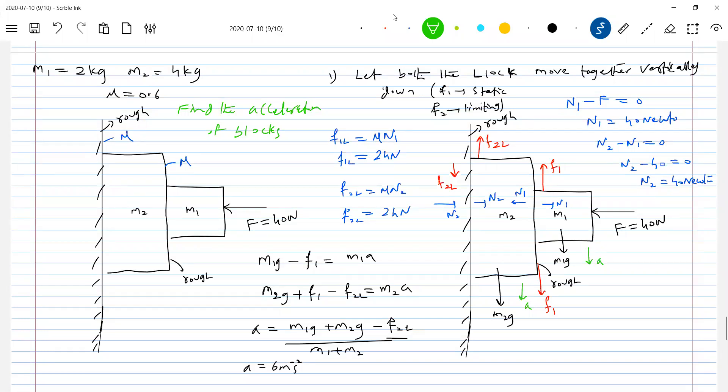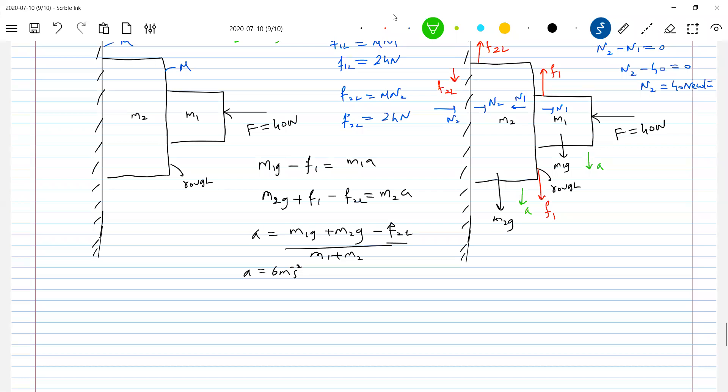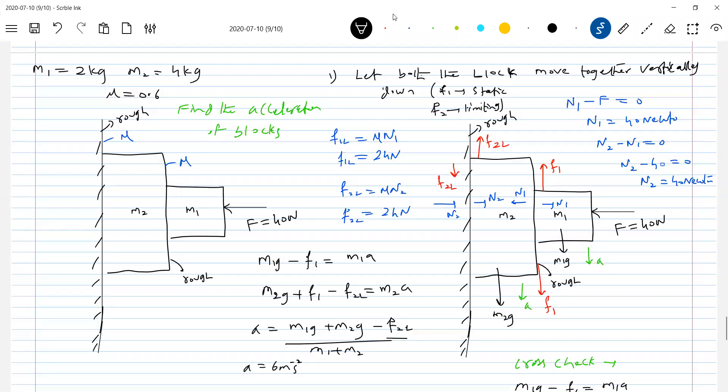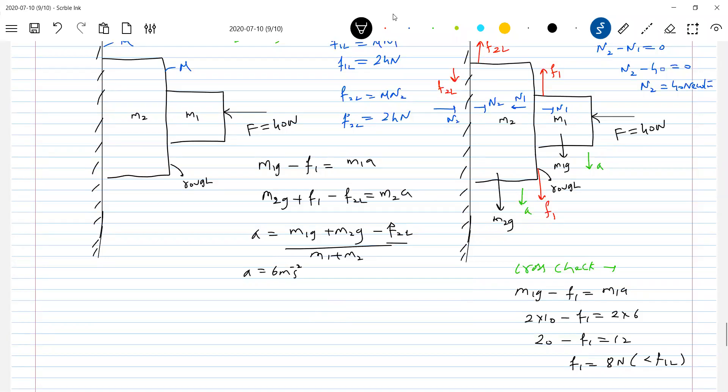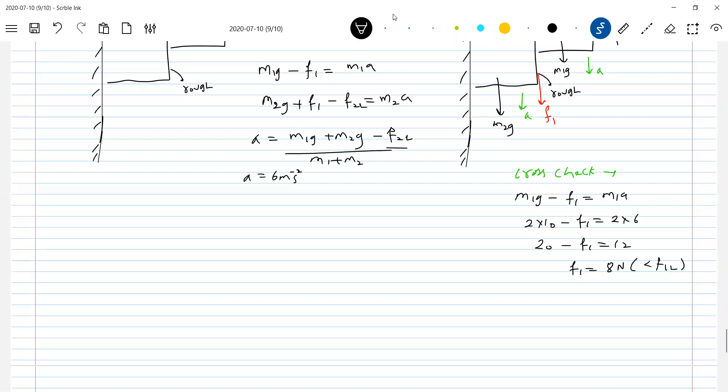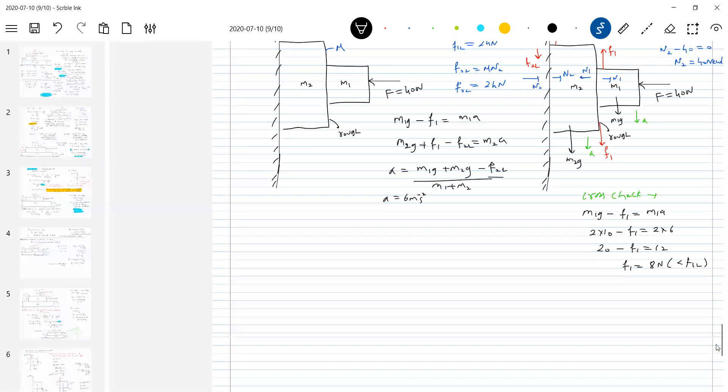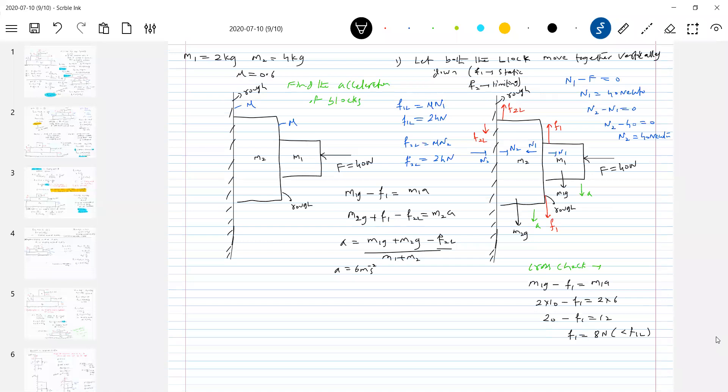We have to cross-check that F1, no? What we assumed static - is it really static is what you have to cross-check. So what we have to do is, is it my answer right or wrong? I should go for cross-check. What is the cross-check? I'll write it. I'll look at the block M1. M1G minus F equal to M1A. M1 is how much? 2 kg, 2 into 10, F1, 2 into 6. So this will be 20 minus F1 equal to 12. F1 how much I'm getting? 8 N. But what is the maximum permitted value of F1L? 24 N. So what is my assumption - right or wrong?